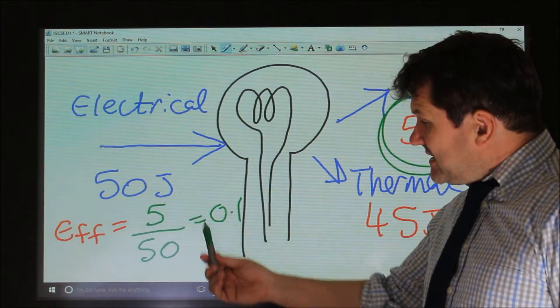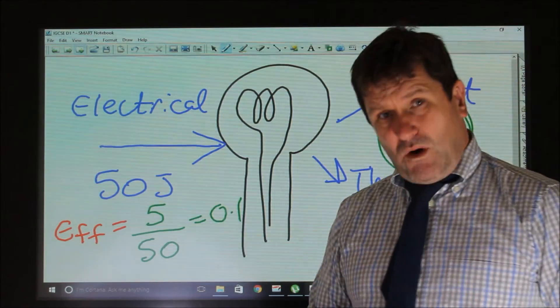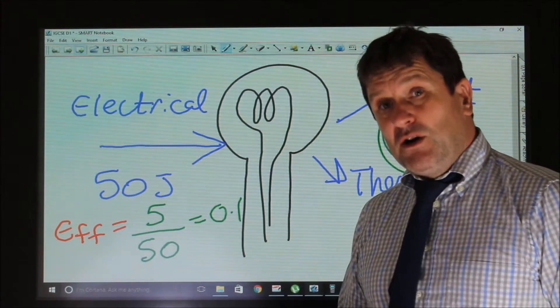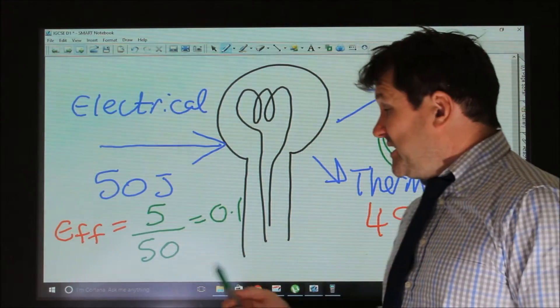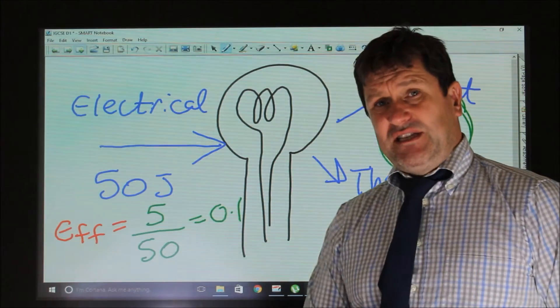Or we can write it like this as a number less than 1. This way is fine, unless you're asked to convert it to a percentage. But this way is fine. That's how efficiencies are typically written.